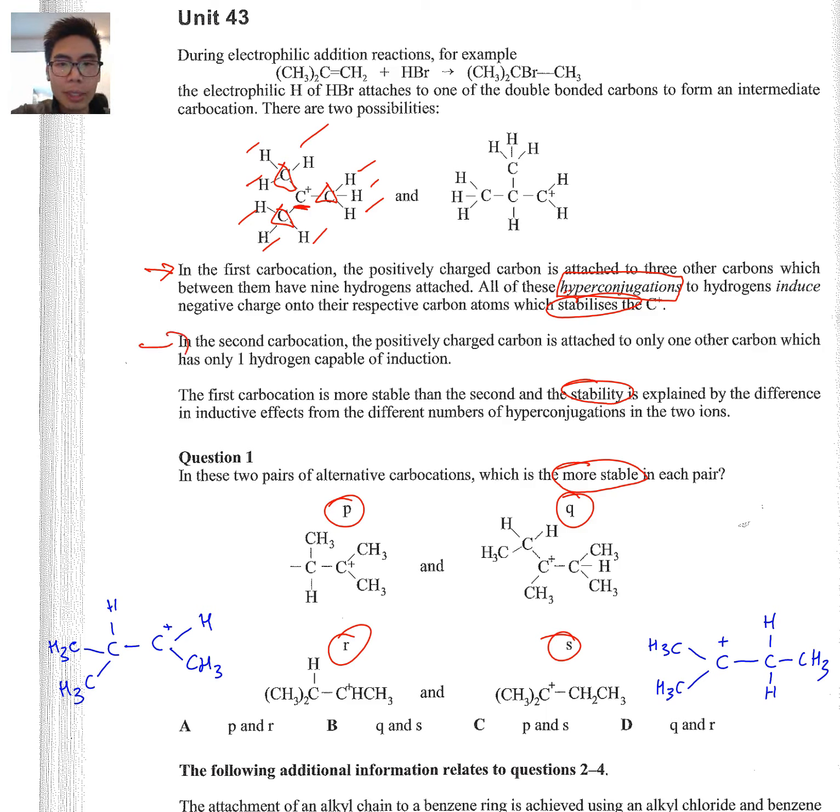In the second carbocation, the positively charged carbon, which is this guy, is attached to only one other carbon, which has only one hydrogen capable of induction, and that's this one on the bottom here. So hence why we've got nine versus one. So in the example above, out of the two, the left-hand molecule is more stable because it's got nine hyperconjugations versus one on the other side.